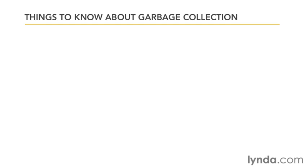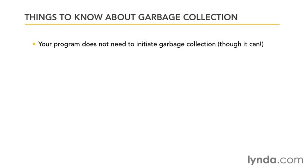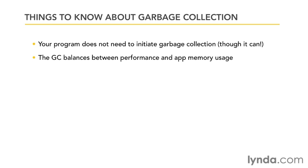So what are some important things to know about garbage collection? First, your program does not need to initiate this process — the garbage collector figures out when it needs to run and reclaim memory. There is a way for your program to initiate garbage collection, and we'll actually take a look at that in an example in just a bit. The garbage collector balances between performance and app memory usage, and objects are not necessarily reclaimed right away. This means you don't know when garbage collection is going to happen. The garbage collector tries to figure out how your program is doing its work and how much memory is being used.